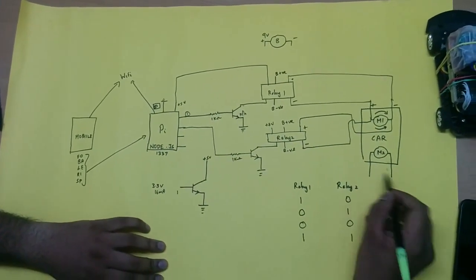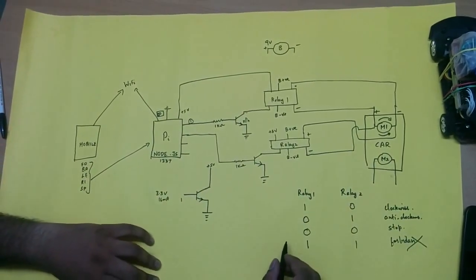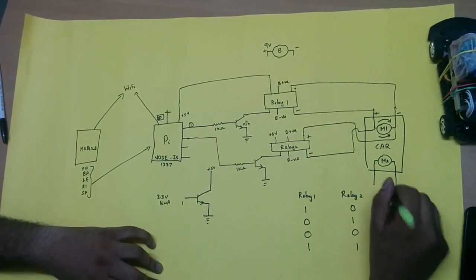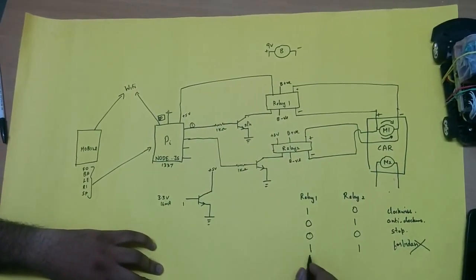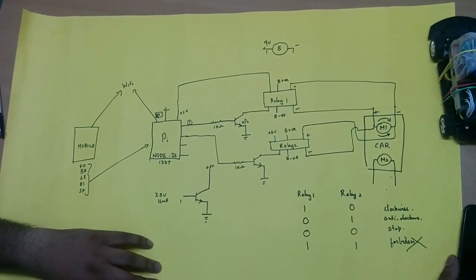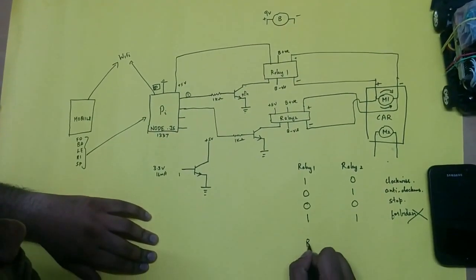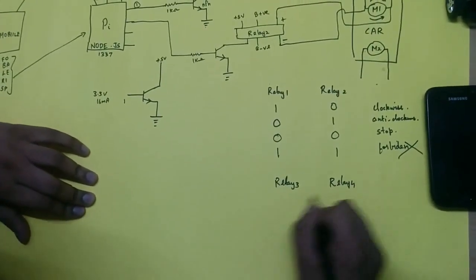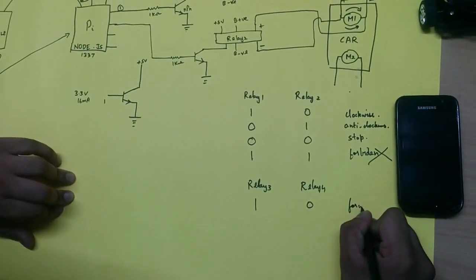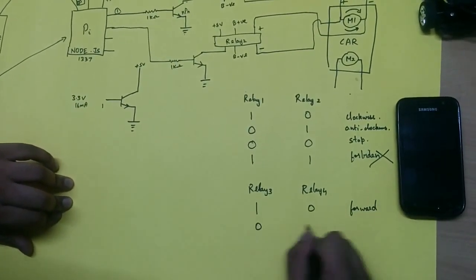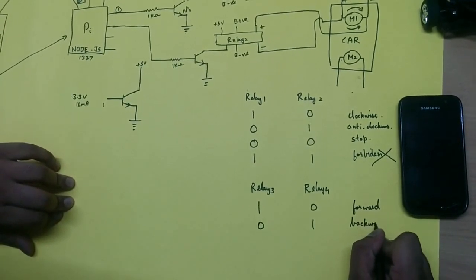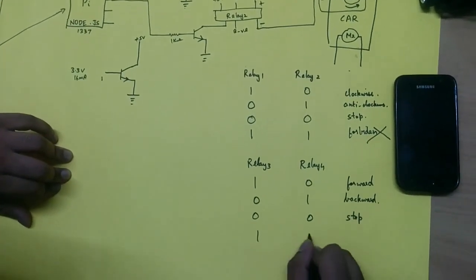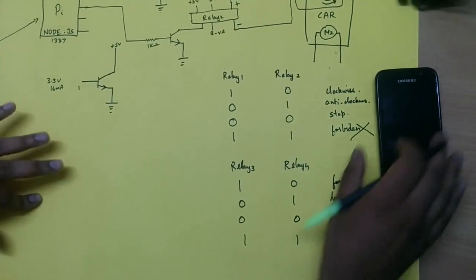Now let's see how to connect motor 2. This is the same logic I used in motor 2. I used two more NPN transistors and 2 more relays to control the forward and the backward motion. So now relay 3, 1 and 0 will be forward, 0 and 1 will be backward, 0 and 0 will be stopped, 1 and 1 should not be done.